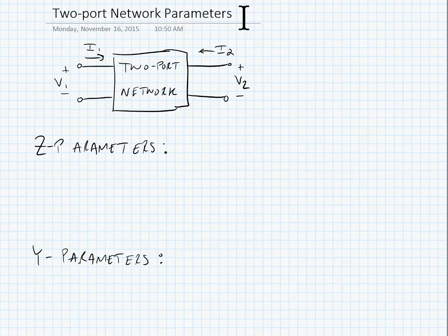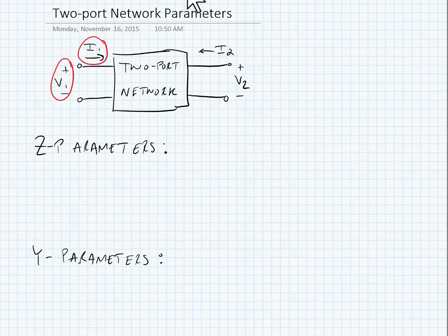We're now going to look at two-port network parameters, which are going to be used to calculate the feedback parameters for various types of amplifier networks. In our two-port networks, we're going to be able to monitor either the voltage or current at the input ports or the output ports. The connections that we have at the input ports and output ports are going to define these.